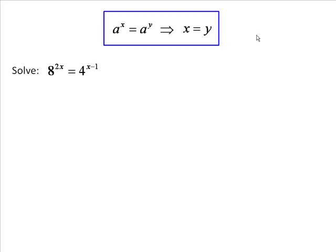Let's put that rule at the top of the page and look at an example. Now, this is one where the base number is not the same on both sides. However, we can easily arrange it so that we do get the same base number on both sides. We should spot that 8 is 2 cubed and 4 is 2 squared. So, first of all, write it down like that.